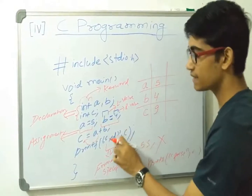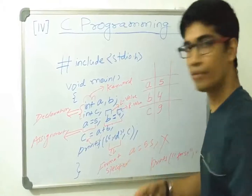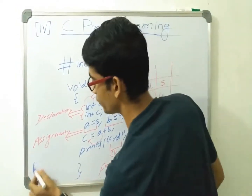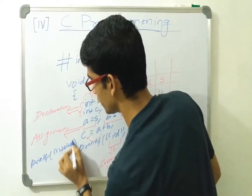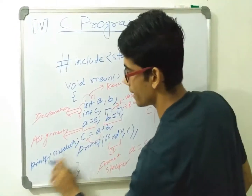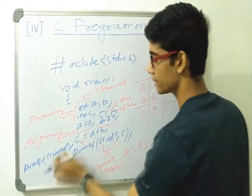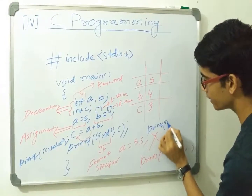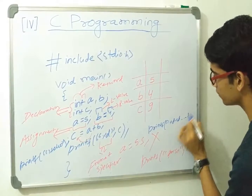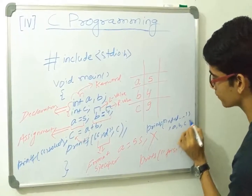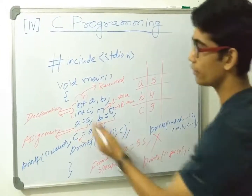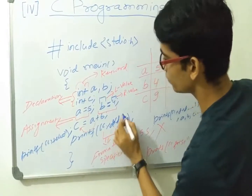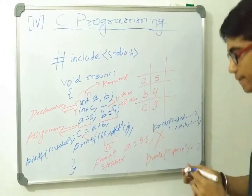So '%f' is for float and '%d' is for integer; for character it is '%c'. We have different format specifiers for different data types. If we just want to print a message like "hello", we write printf("hello") directly without any format specifier, because we are not printing a variable. If we want to print multiple variables, we write printf("%d %d", a, b) and so on.